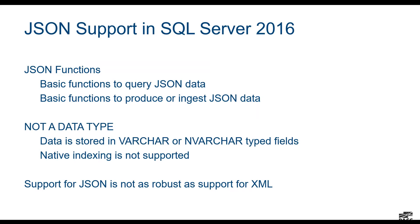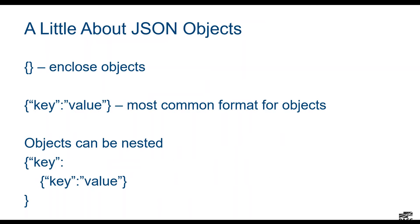When SQL Server 2016 announced JSON support, a lot of us were very excited. What they have are JSON functions — to create JSON data, generate JSON, ingest JSON, and interrogate JSON. One key differentiator between JSON and XML is that JSON is not a data type. Data is stored in VARCHAR and NVARCHAR fields, and as a result, native indexing is not supported. Because of this, the support for JSON is not nearly as robust as the support for XML.